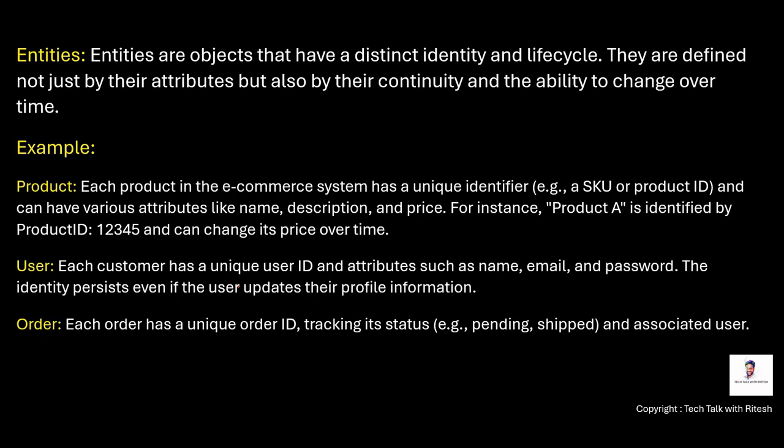The next key concept is entities. Entities are objects that have a distinct identity and life cycle. They are defined not just by their attributes, but also by the continuity and the ability to change over time. For example, each product in the e-commerce system has a unique identifier.